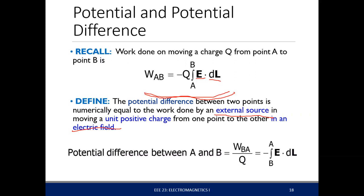Therefore, when we want to get the potential difference between your point A and point B, it's just the work from B to A divided by Q, which is this expression right here.